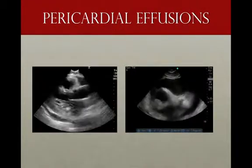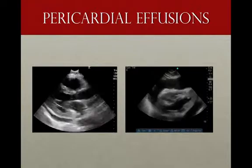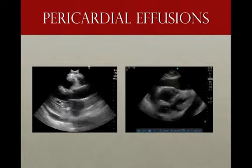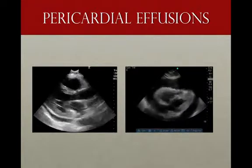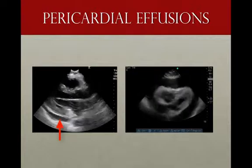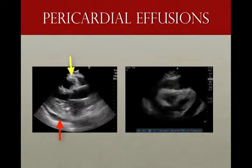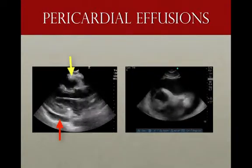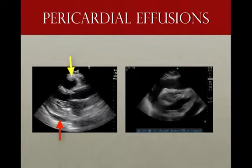Pericardial effusions with tamponade exist on a spectrum. Looking at the image on the left, there is a pericardial effusion with maybe just a tiny bit of right ventricular collapse — but that's not really tamponade and would not be causing the shock.